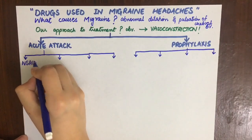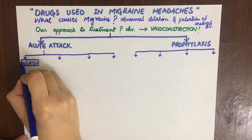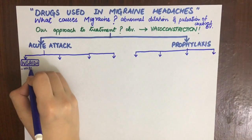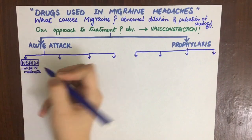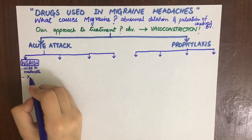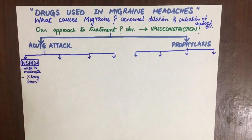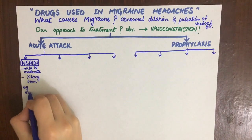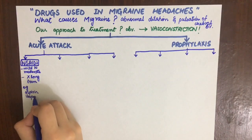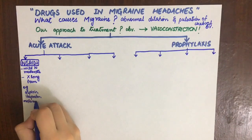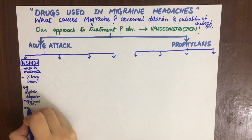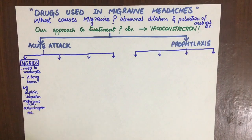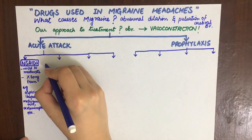The first type of drugs are NSAIDs. They are used in mild and moderate migraine, but we do not give them long term because of side effects such as hyperprothrombinemia — by interfering with the action of vitamin K in the liver — and sodium and water retention due to prostaglandin inhibition. Examples are aspirin, mefenamic acid, ibuprofen, and naproxen.